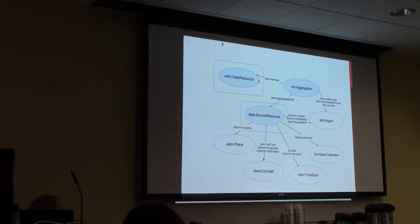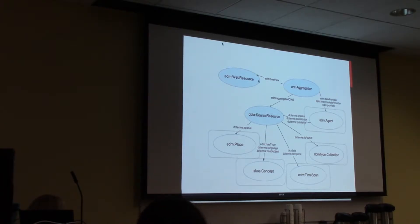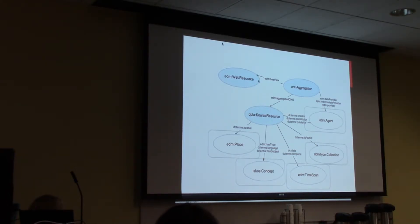Most of the descriptive metadata goes in a record called the source resource record, which looks most like a traditional metadata record — and that's what we'll spend the most time working on. The other main part is the web resource class, where we store information about specific digital objects: URLs to previews and thumbnail files, and the type of image or object. The source resource is further related to other classes for contextual information like subjects, spatial locations, and time periods. This allows us to hold more detailed information about a place — for example, having a whole separate record about Erie, Pennsylvania rather than just one field. There's plenty of documentation on the metadata application profile if you'd like to learn more.